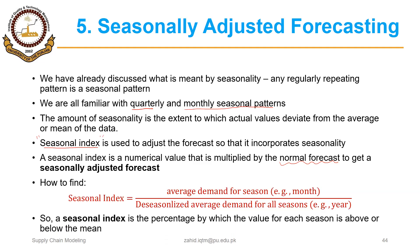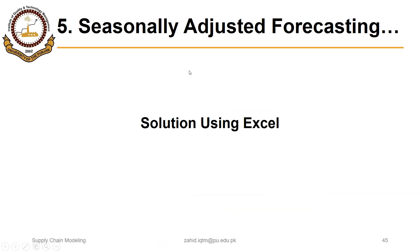A seasonal index is the percentage by which the value for each season is above or below the average. If the seasonal index is less than one, that shows that the value for that season is below the average, and if it is greater than one, then the value for that season is above the average. We will solve an example where the data has an increasing year-to-year trend but also seasonality within a year from month to month, so we will address both patterns.